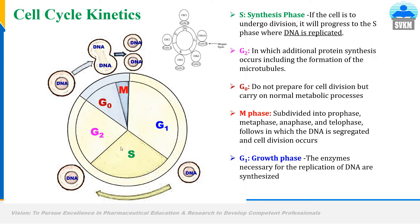Later on, from the S phase, the cell moves to the G2 phase. In the G2 phase, additional protein synthesis takes place, including the formation of microtubules and necessary enzymes.